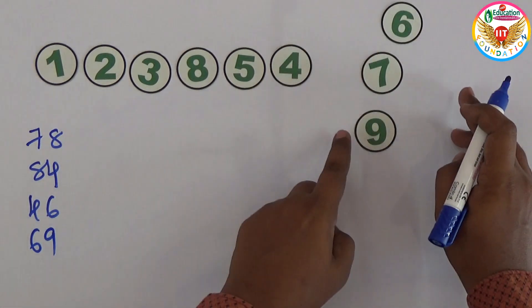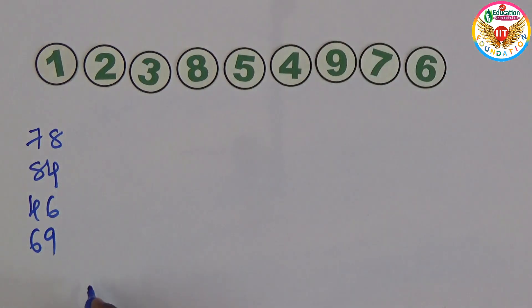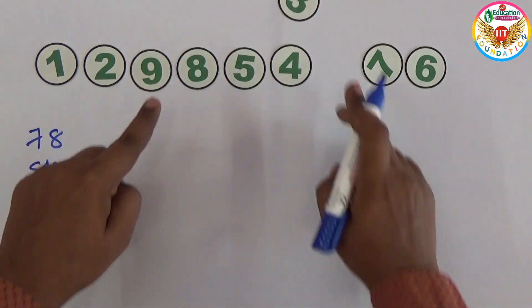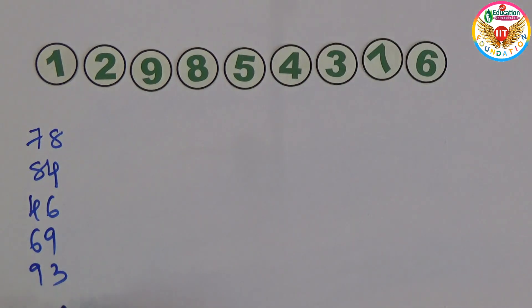6 and 9. 9 and 3, 9 and 3 positions. Yeah, next is 3 and 2. 3 and 2 I change.